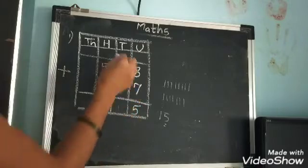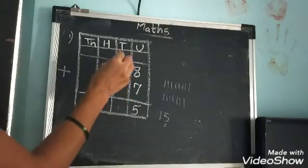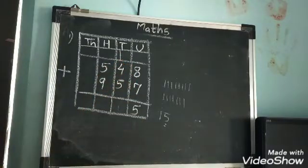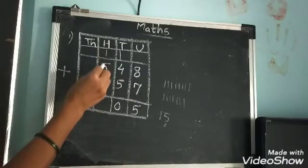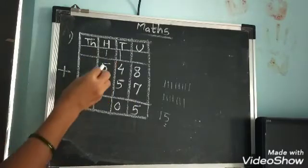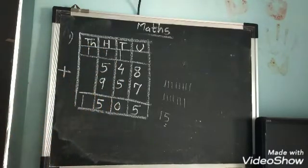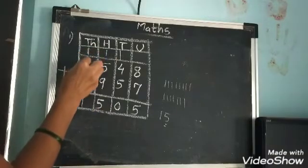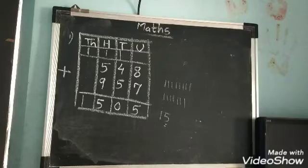1 is the carrying over. Now add: 1 plus 4 plus 5 — 1 plus 4 is 5, plus 5 is 10. Write 0, and 1 is the carrying over. Now: 1 plus 5 plus 9 — 9 plus 1 is 10, plus 5 is 15. You can draw lines or count on fingers. This 1 — there are no more digits, so it comes down as it is. The answer is 1505. It is not a word problem, so no need to write using the three dots.